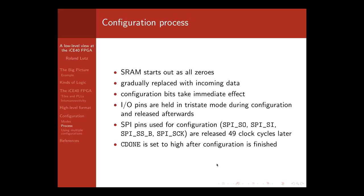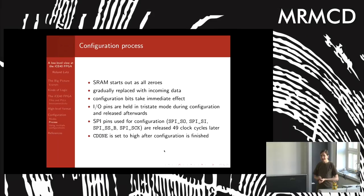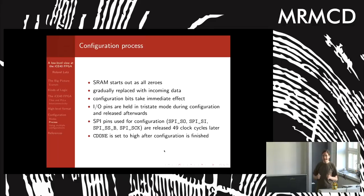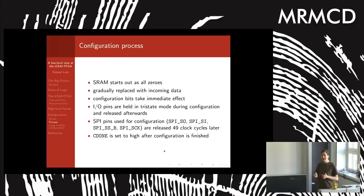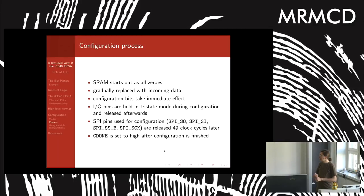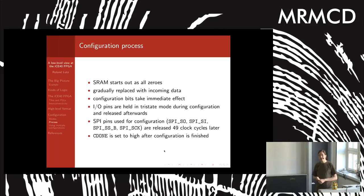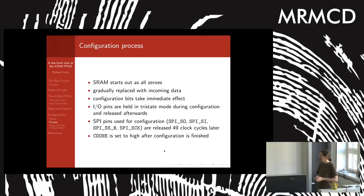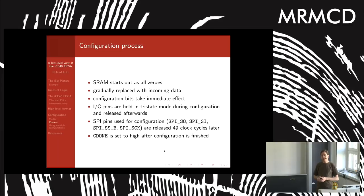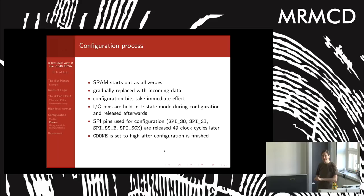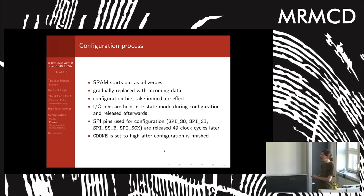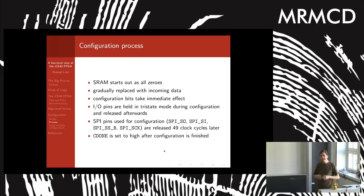Something notable about the configuration process: the configuration starts out as completely zero and is replaced as configuration data is read in, with each bit taking effect immediately. To avoid chaos with the IO pins they are disabled during configuration. After configuration is done the IO pins are re-enabled, and there is a special pin called CDONE which indicates configuration is complete. The pins used for SPI can also be used as IO, but they are only released 49 configuration clock cycles after configuration completes, so you must cycle the configuration clock 49 times for those pins to be released.